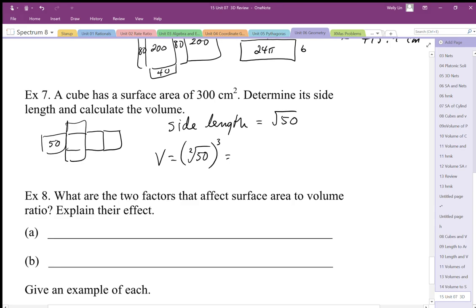Okay, so taking square root 50 and cubing it, I get 300 approximately, this is approximately, the decimal value is approximately 353.55 centimeters cubed.